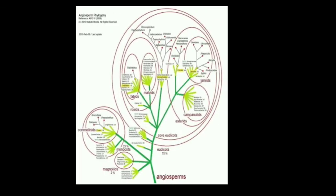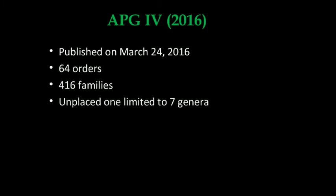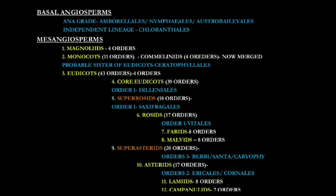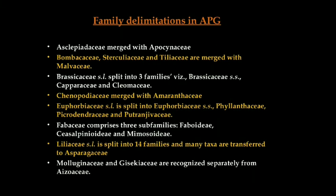This is a brief outline of the angiosperms. APG 4 was published on March 24, 2016, having 64 orders and 416 families, and there are 7 genera which are unplaced and not placed in any of the groups. This is a brief outline of APG 4 showing how families, orders, and higher categories are placed respectively.